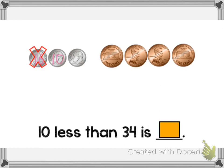Well, we know that these equal 10, and these equal 1 cent. So this is already crossed out for us. That means we're not going to count that one. We're going to count all the rest to see what 10 less than 34 is.